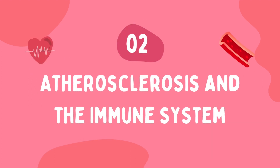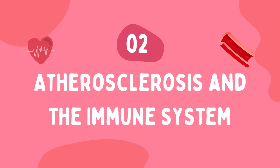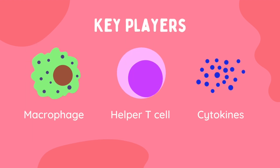Now that we have provided an overview of atherosclerosis, let's talk about the immune system's involvement. Here are some of the key immune system players involved in the disease. Macrophages are resident cells in the blood vessels that get rid of disease-causing agents through a process called phagocytosis — these cells literally eat up the substance, in this case cholesterol. Helper T cells are part of the adaptive immune system and can recognize specific substances and become activated against them. Once activated, they migrate to the area of injury and help activate other cells to fight against the disease-causing agent. Finally, cytokines are small molecules released by white blood cells to attract other white blood cells to the area of injury.